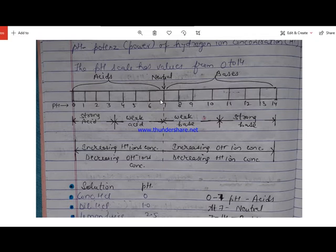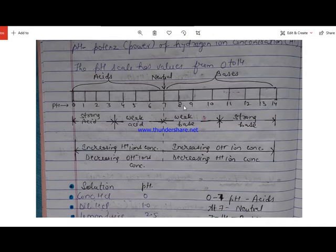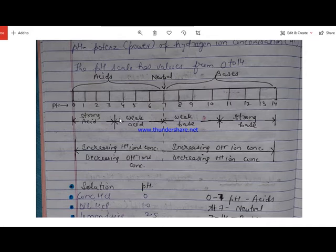If the pH of a solution is 7, then it would be a neutral solution — neither acidic nor basic. pH above 7 and up to 14 would be the pH of a basic solution. If the pH is from 0 to 3.5, it would be a strong acid. If the pH is from 3.5 to 7, it would be a weak acid.